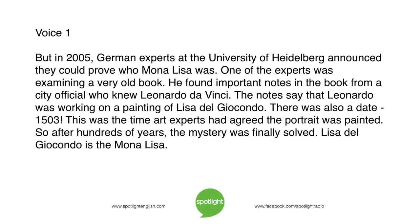But in 2005, German experts at the University of Heidelberg announced they could prove who Mona Lisa was. One of the experts was examining a very old book. He found important notes from a city official who knew Leonardo da Vinci. The notes say that Leonardo was working on a painting of Lisa del Giacondo, and there was also a date — 1503. This was the time art experts had agreed the portrait was painted. So after hundreds of years, the mystery was finally solved: Lisa del Giacondo is the Mona Lisa.